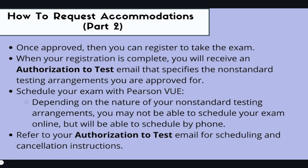Once you've been approved — once the board says yes — you can register for your exam. This is why you must do it beforehand, so the accommodation can be noted in the system. You'll receive an authorization to test email specifying which accommodations and arrangements you're approved for, and that information will be sent to Pearson VUE. Depending on your accommodation, you may be able to schedule online through Pearson VUE's portal, or you may need to schedule by phone. Always refer to your authorization to test email — it will have all the logistics you need to schedule, cancel, or reschedule your exam.